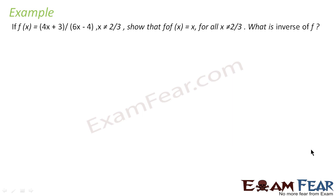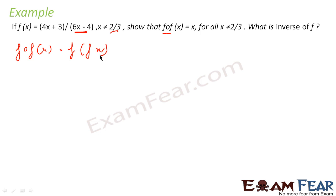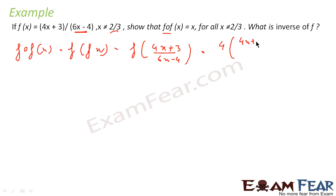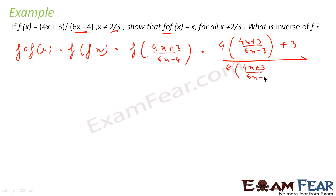Let us take one more example. f(x)=(4x+3)/(6x−4), where x≠2/3, because if x=2/3 the denominator becomes zero making the expression undefined. We have to prove that f(f(x))=x. Let us find f(f(x)): substitute f(x)=(4x+3)/(6x−4) into f, giving f((4x+3)/(6x−4))=4·((4x+3)/(6x−4))+3 divided by 6·((4x+3)/(6x−4))−4.